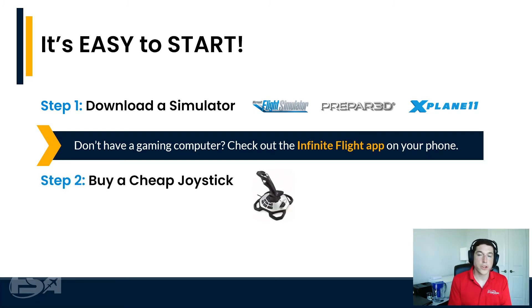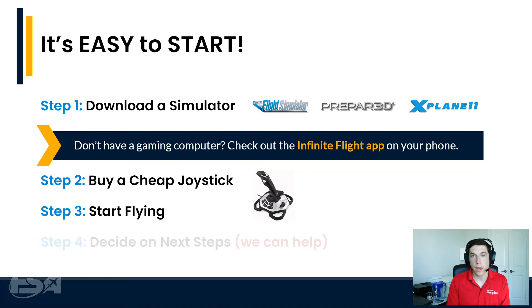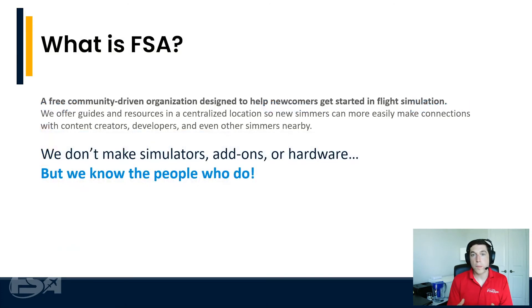So you've got your home sim downloaded on your computer — now go out and get a cheap joystick, plug it in. That's all the setup you need to do. Then get flying. Give it a try. See what you like and what you don't like. Now is a good time to do a little bit of research on where you want to take this next, and we'd be happy to help you with that.